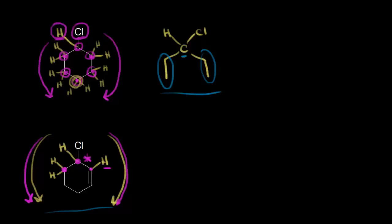Looking at the other carbons in this ring: this carbon is sp2 hybridized — there's a double bond — so it's not a chirality center. This carbon has two hydrogens bonded to it. This carbon has two hydrogens bonded to it. This carbon has two hydrogens bonded to it. So there is only one chirality center in this molecule.